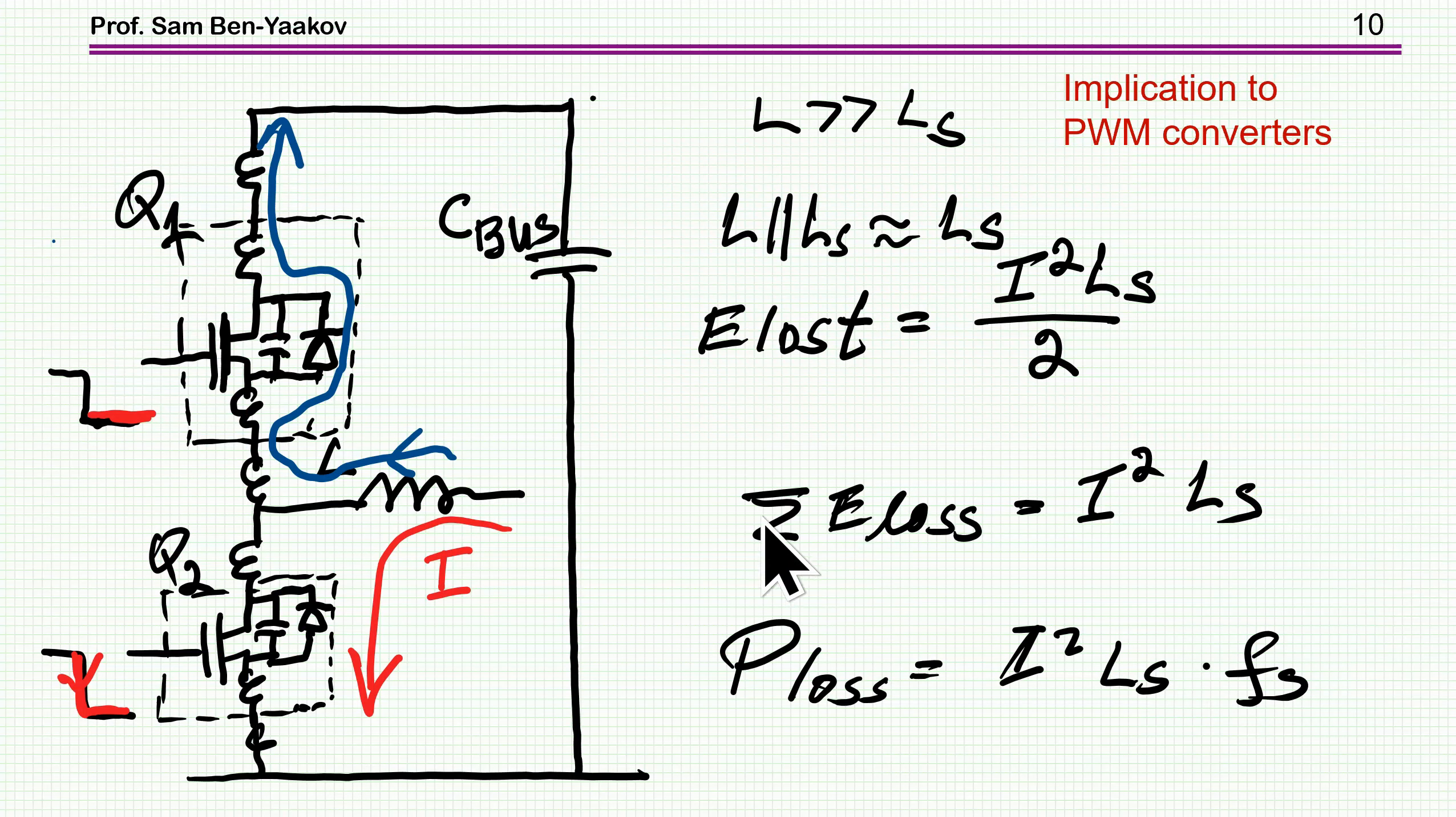Now what is the implication to a PWM converter? Now these inductances are much smaller than this one. So if you calculate the energy loss, then these two in parallel are actually the stray inductances. So the energy loss, in this case, for the connection here, will be I squared, the current of the inductor, times Ls over 2. This is when connecting. But this energy, eventually, is going to be lost, because when this transistor is turned on again, we have current in the other direction, and it's going to be lost. So therefore, the total loss is I squared Ls. And the power loss is times the frequency. Now the higher the frequency, the larger are the losses. And this shows, again, that parasitic inductances are very bad, and you should try to avoid them as much as you can in PWM converters.